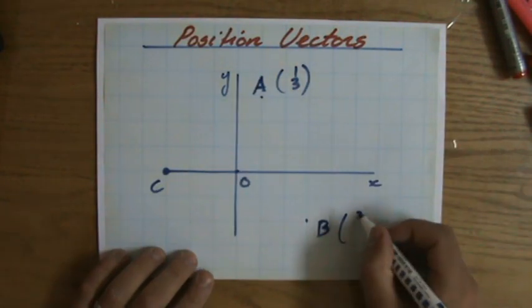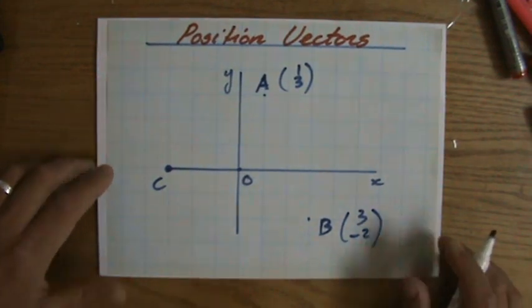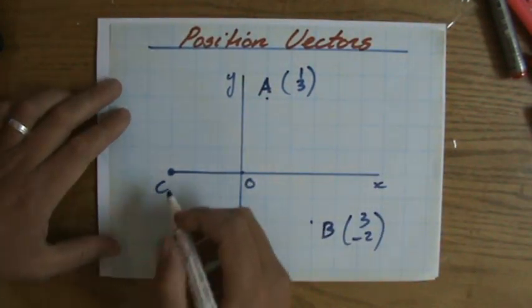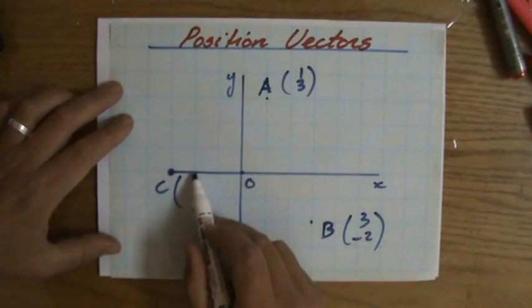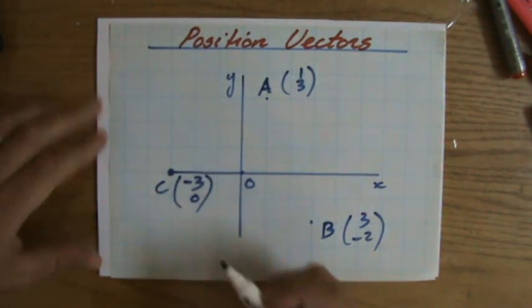Because I'm going minus two up, which means two down of course. And the position vector of C is going to be one, two, three, but then minus three, zero because I'm going zero up or down.